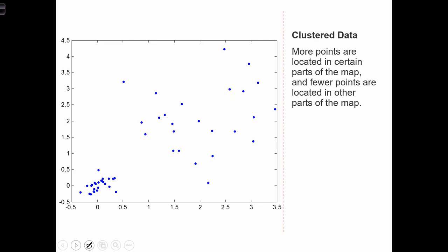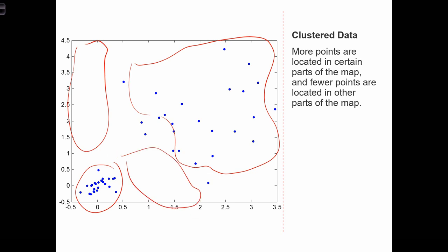In clustered data, more points are located in certain parts of the map, and fewer points are located in other parts of the map. Over here, we've got a location with a lot of points, where points are clustering together. We have kind of a random area over here where points appear to be pretty randomly distributed, and then we have areas where there's no points at all.